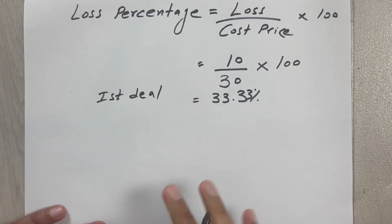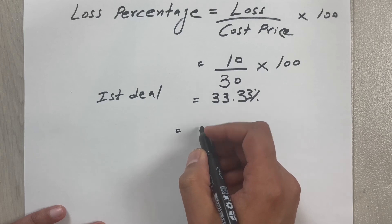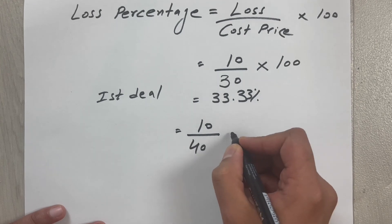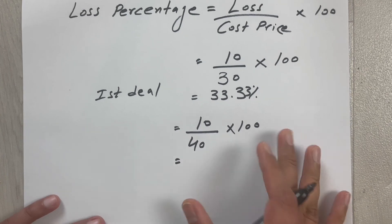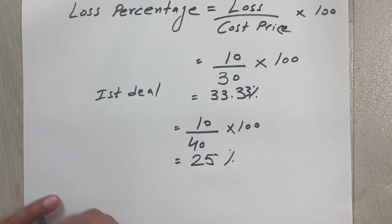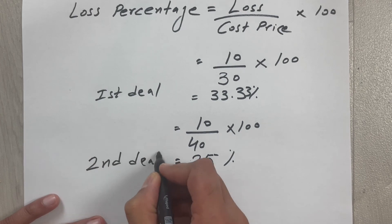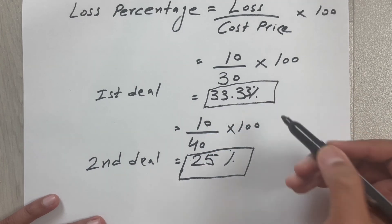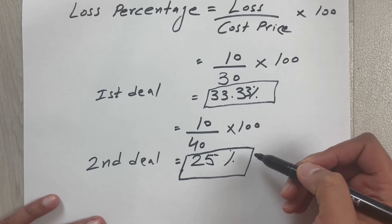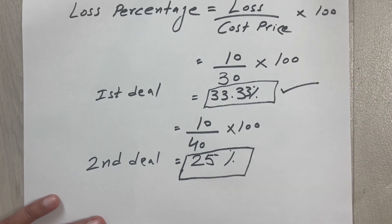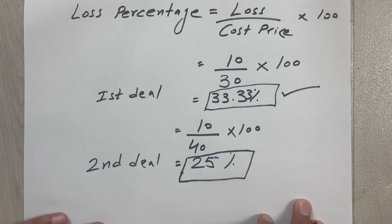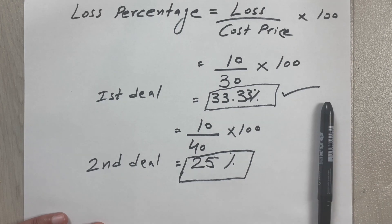Now for the second deal, the loss was 10 again but the cost price was 40. So: 10 divided by 40, multiplied by 100, gives us 25 percent. As you can see, for the second deal the loss is 25 percent and for the first deal the loss is 33.33 percent — so the first deal had a bigger loss. This is how you calculate the loss percentage. I hope you liked the video. Please subscribe to my channel. Thank you very much.